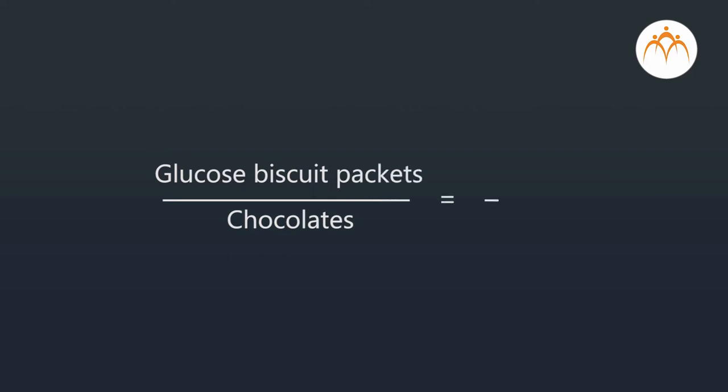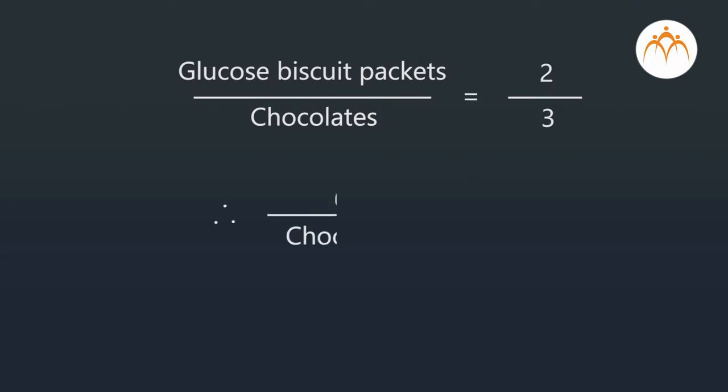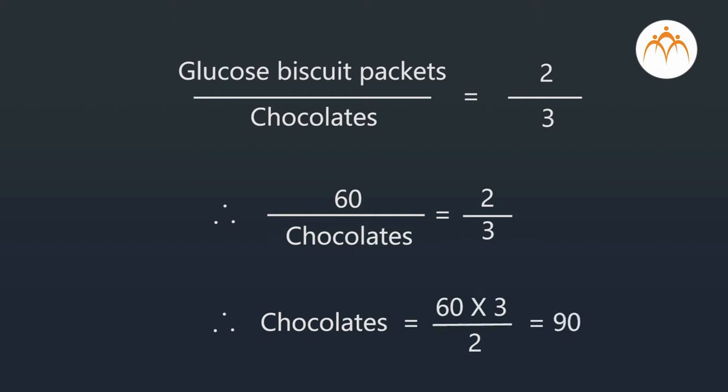Now, tell me the answer. On 2 glucose biscuit packets, 3 chocolates are given free. On 4 packets, 6 chocolates would be given free. That means there is direct variation between glucose biscuit packets and chocolates. So, glucose biscuit packets divided by chocolates, which is equal to 2 divided by 3, should remain constant. In a whole day, 60 packets of glucose biscuits were sold. To find out the free chocolates given along with them, we solve: 60 divided by chocolates equals 2 by 3. From this, chocolates equals 60 into 3 divided by 2, which is equal to 90. So, 90 chocolates were given along with glucose biscuit packets.